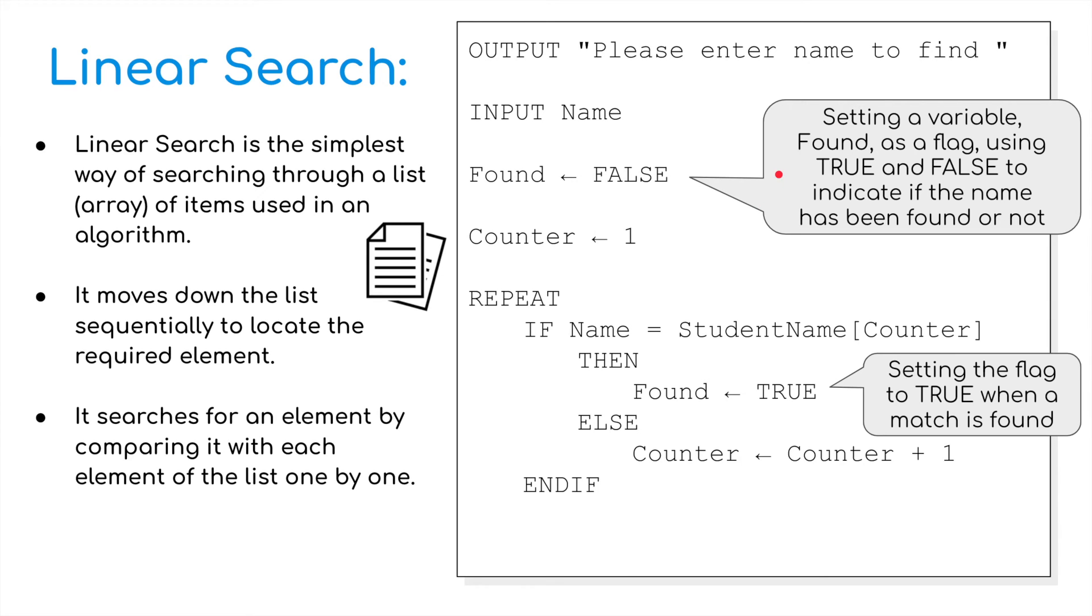So what are we trying to do? Please enter name to find. So all this is doing, if I've got a list of students in my search, I've got a document here called student names. And it says, please enter name to find. So if I enter a student name, found is currently set to false. So setting a variable found as a flag using true and false to indicate if the name has been found or not. So we default it to false and we set the counter to one.